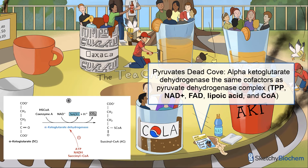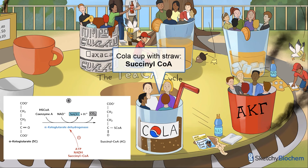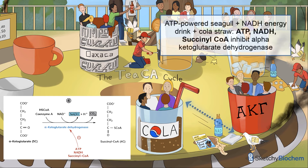If you don't remember anything about pyruvate dehydrogenase, please watch the PDC sketch. Our product in step 4 is succinyl-CoA, and our next group of 4 people are sitting in a cola cup with a straw, used for sucking cola — or succinyl-CoA. Another pesky ATP-powered seagull is grabbing that beer-soaked towel, kinda like how ATP shuts down alpha-ketoglutarate dehydrogenase. NADH also inhibits alpha-ketoglutarate dehydrogenase, and succinyl-CoA inhibits it through product inhibition.